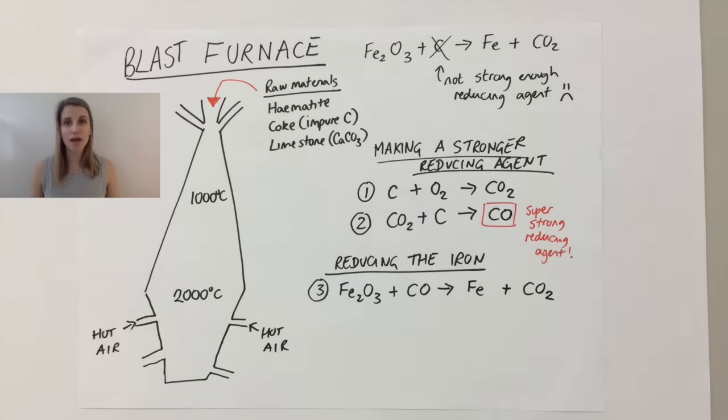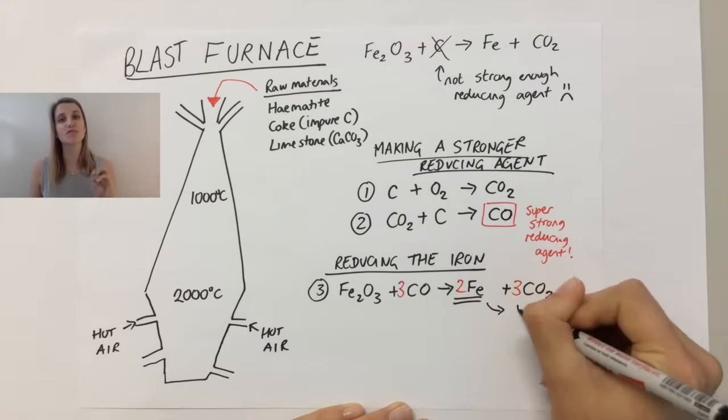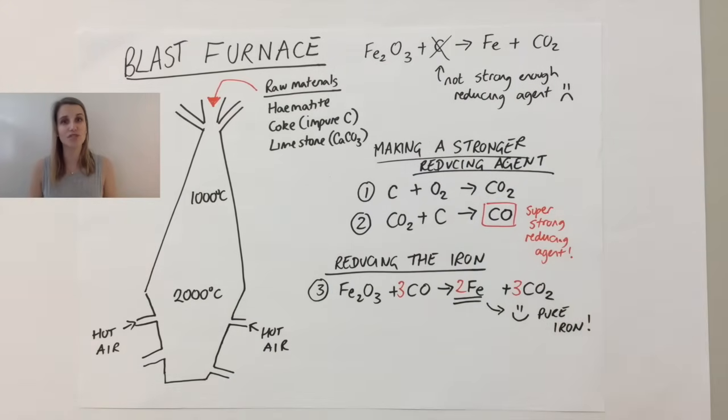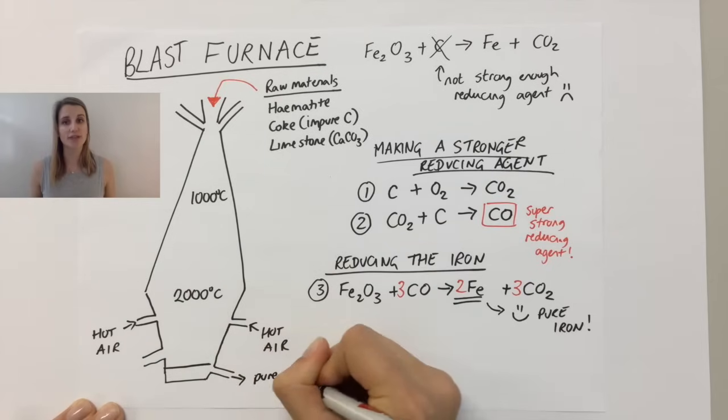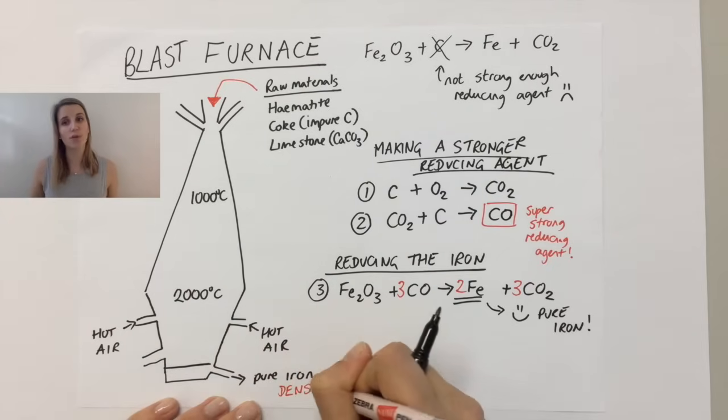The pure iron comes off at the bottom of my blast furnace because it's really, really dense. That means it's really heavy for its size. So really dense, it comes off at the bottom there.